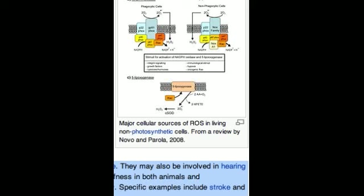ROS are produced as a normal product of cellular metabolism. In particular, one major contributor to oxidative damage is hydrogen peroxide (H2O2), which is converted from superoxide that leaks from the mitochondria.